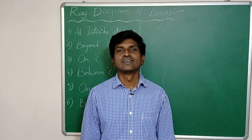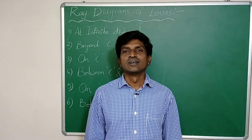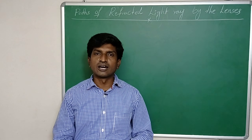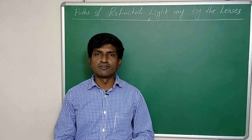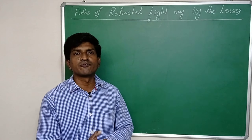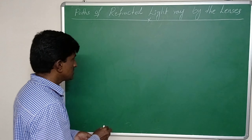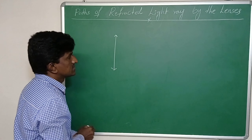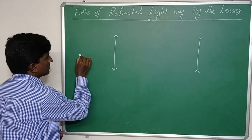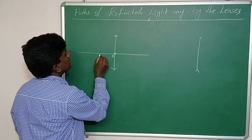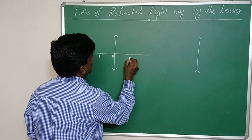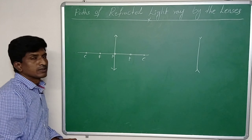Welcome. In this class we are going to learn the paths of different light rays after refraction by lenses — concave lenses as well as convex lenses — how an incident light ray gets refracted and in which direction it moves. What is the path of the refracted light ray? Let us draw simply. Here I am taking a convex lens as well as a concave lens, and I am going to draw a light ray and its path after refraction.